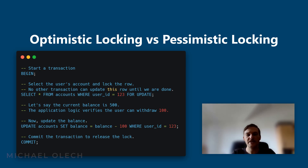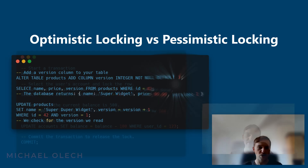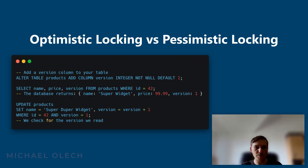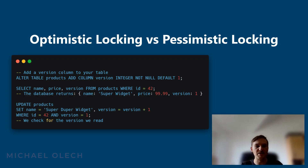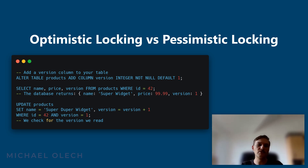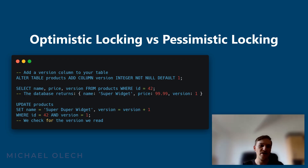Pessimistic locking is common in financial or booking systems. Optimistic locking works on the opposite assumption — that conflicts between transactions are rare. It does not lock records when they are read. Instead, it checks to see if the data has been modified by another transaction before it attempts to write its own changes. This approach is like saying: I will assume everything is fine, but I will double-check that nothing has changed before I save my work. PostgreSQL does not have any built-in automatic optimistic locking mechanism.